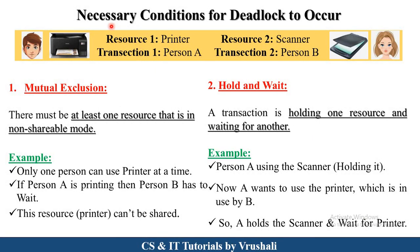Now let's understand the conditions for occurring a deadlock in a database. There are total four conditions: mutual exclusion, hold and wait, no preemption, and circular wait. Let's take an example. There are two resources — resource one: printer, resource two: scanner — and two transactions: transaction one is person A, and transaction two is person B. Person A uses the printer and person B uses the scanner.